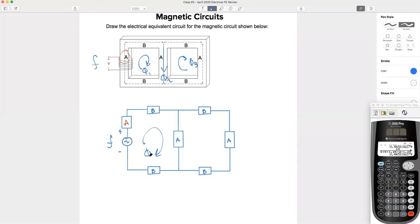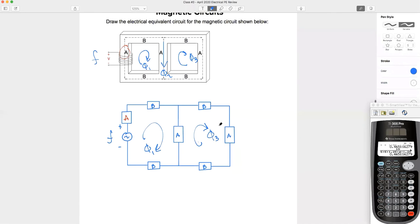All right, here is flux one, right? Here is flux two, flux three. Now, who here feels comfortable writing an equation for flux two? Remember, think of this as a circuit. Let's pretend this is a KCL, right? KCL is currents entering equals current leaving, or in this case, we're dealing with flux.